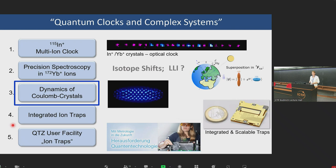Our group is called Quantum Clocks and Complex Systems because we're building novel atomic clocks based on complex Coulomb crystals, mixed species crystals, 1D, 2D crystals. We're heading towards entangled clocks, cascaded clocks. We have five working groups: multi-ion clock, precision spectroscopy where we're testing Einstein's general relativity, technology projects building integrated ion traps with nanophotonics, and outreach.